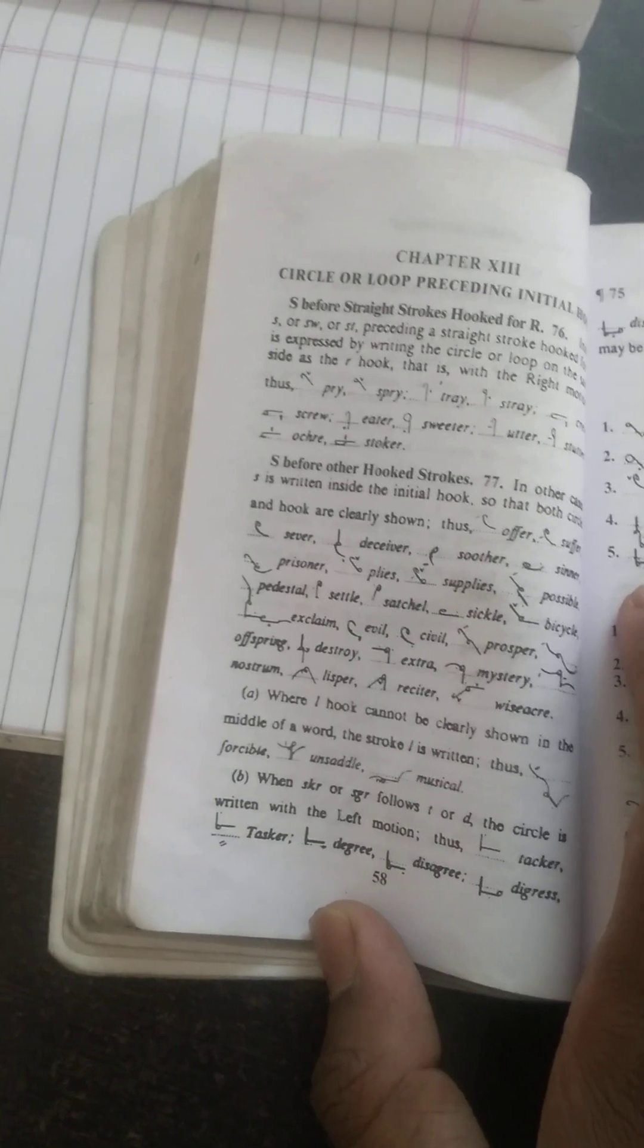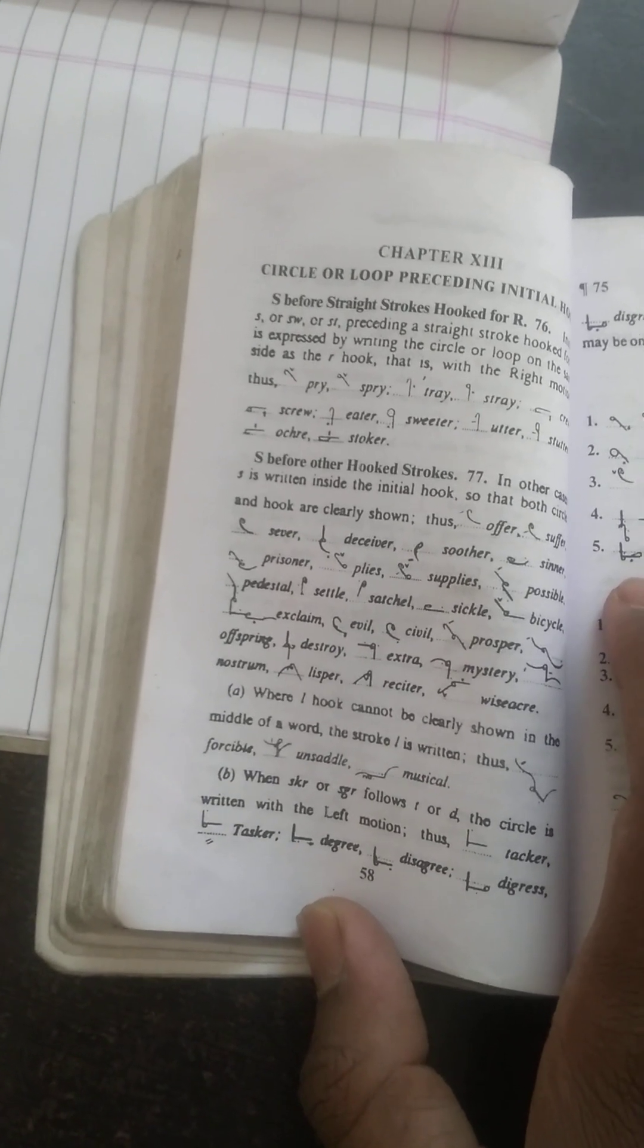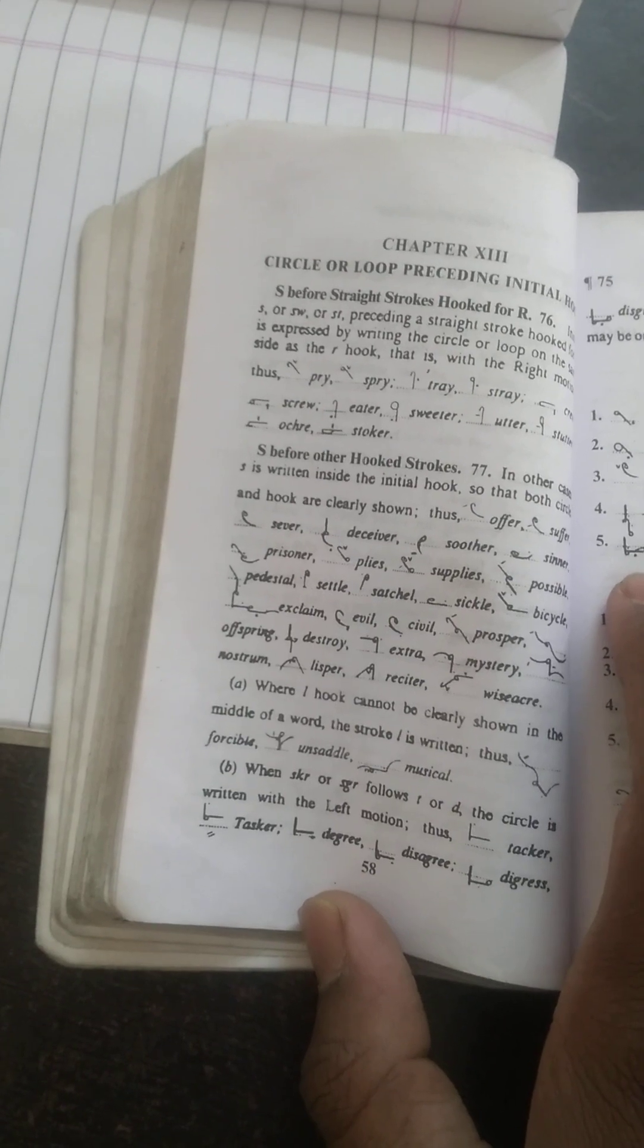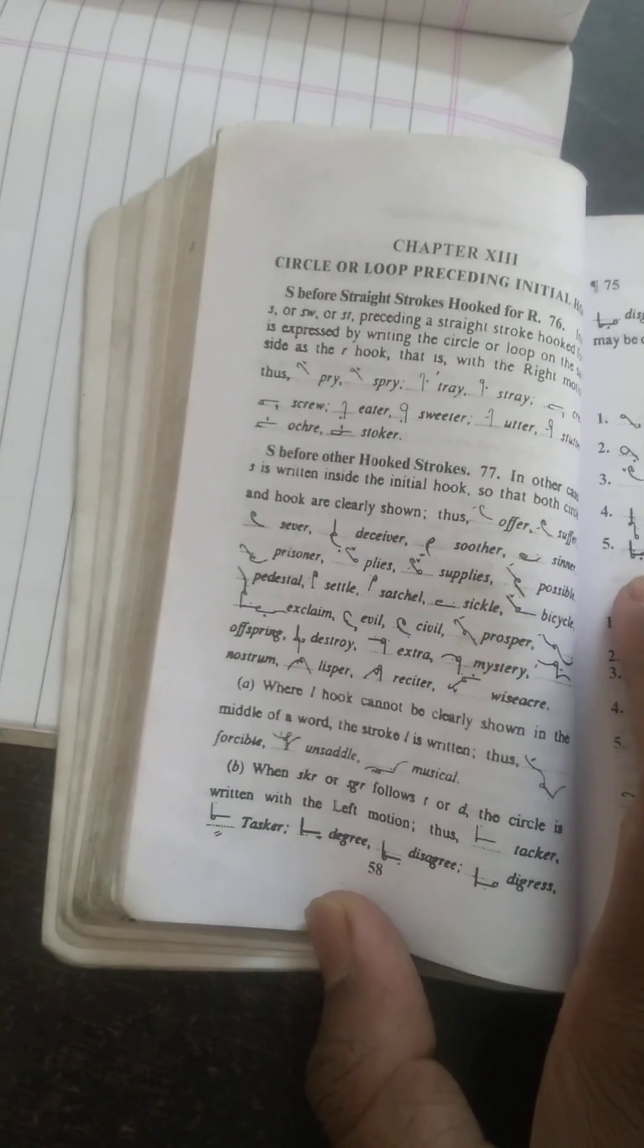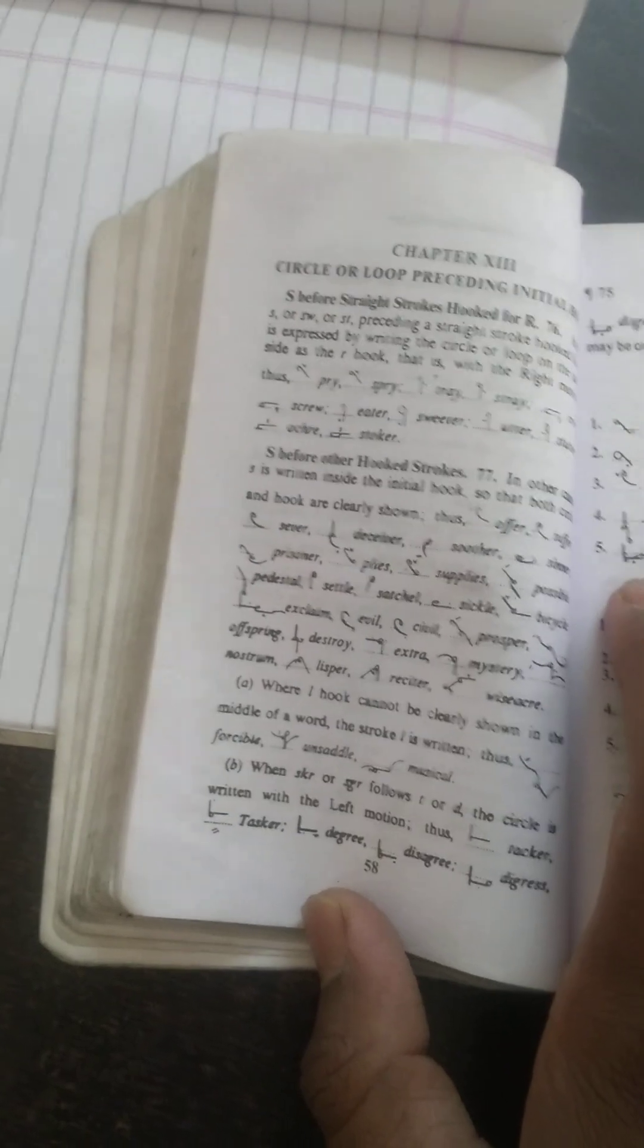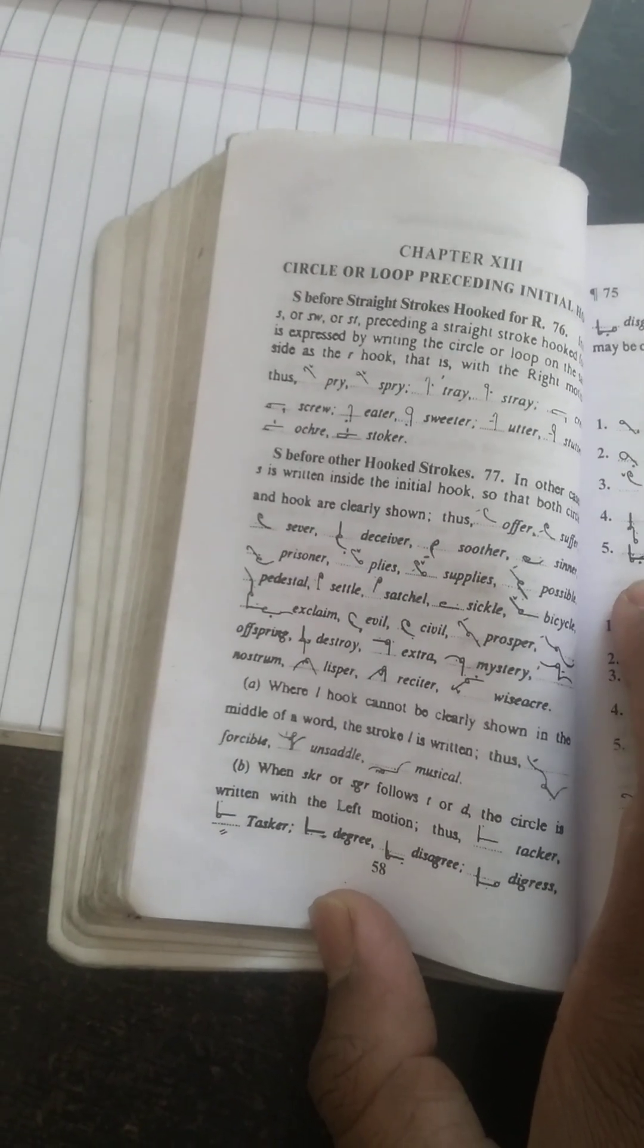When SKR, SGR follows T or D, the circle is written with the left motion. Tacker, tasker, all of them are understood. Disagree, digress, disgrace.